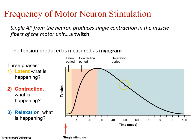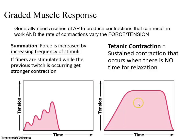Relaxation is when the force goes back down. That relaxation results in calcium being pumped back into the sarcoplasmic reticulum, actin and myosin coming apart, and the lengthening of the sarcomere — something we'd see in an eccentric contraction.